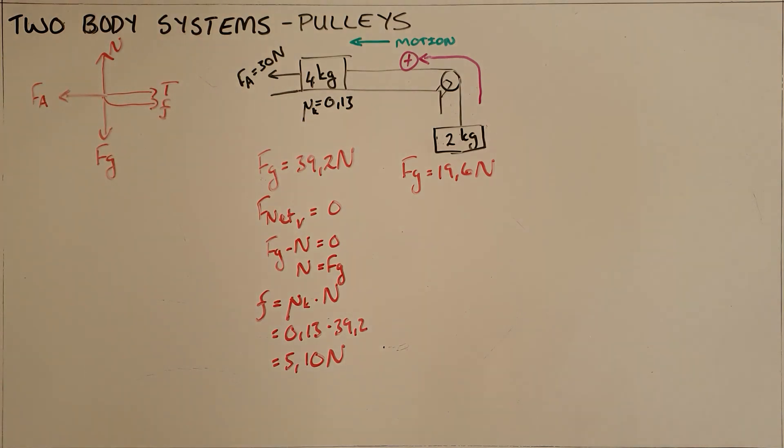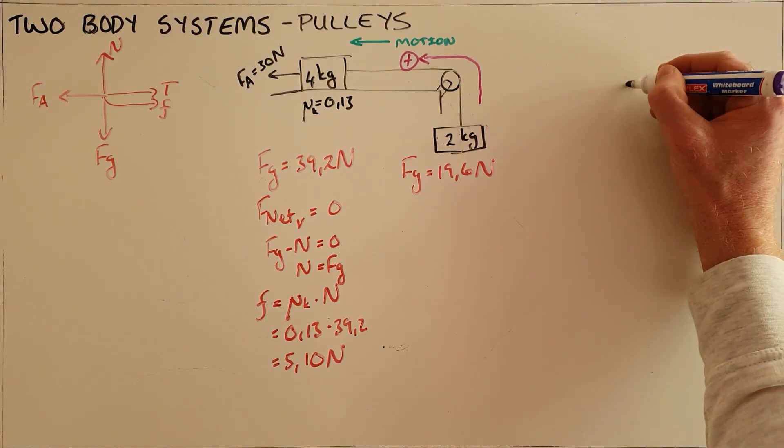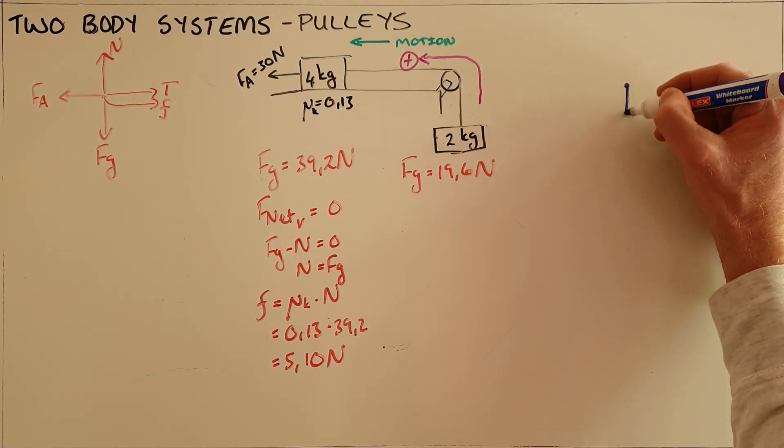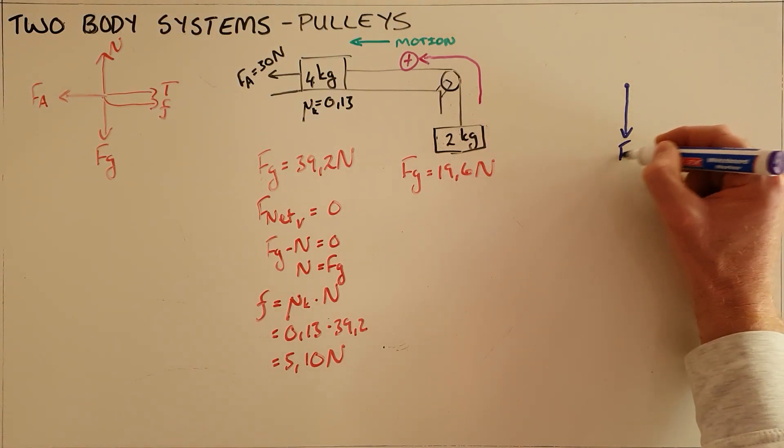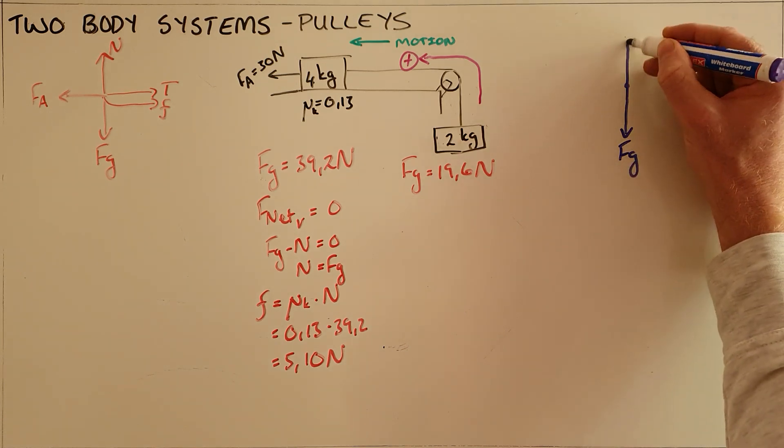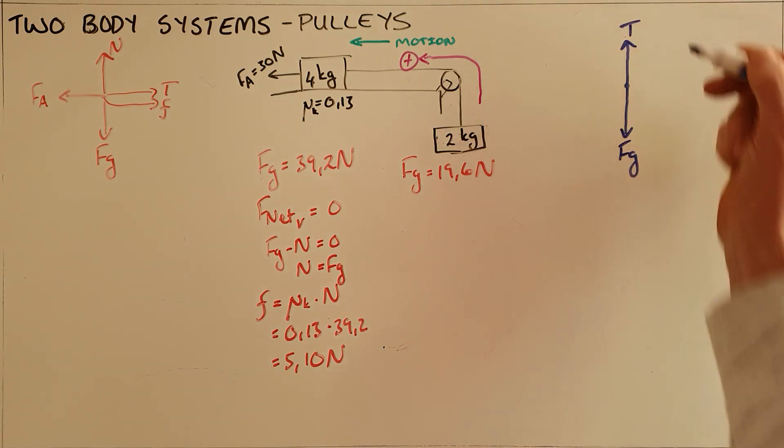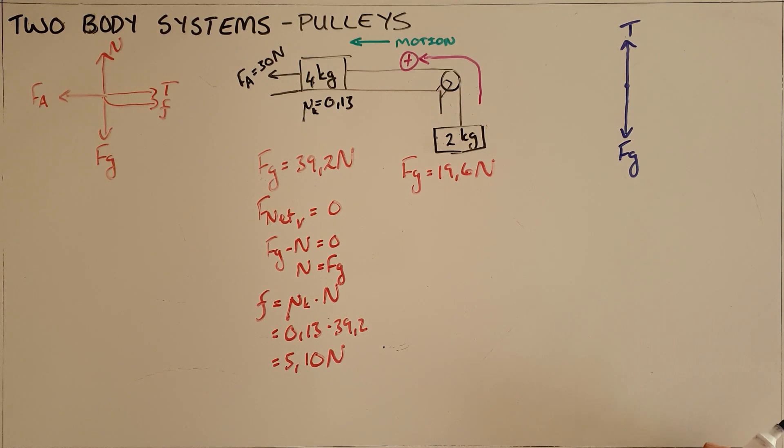In the same way, we draw a free body diagram for our 2 kilogram object. For this object, it is simply a force of gravity pulling the object downward and a tension force pulling the object upward. We ignore the effects of air friction as they are so small we can consider them negligible.